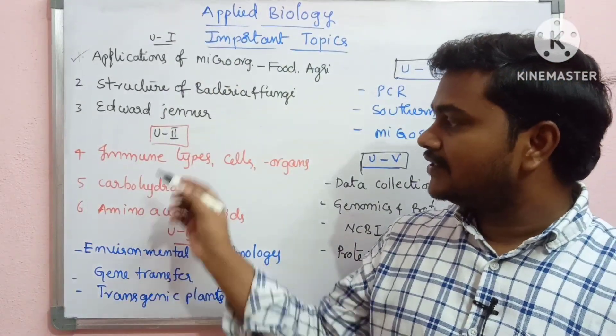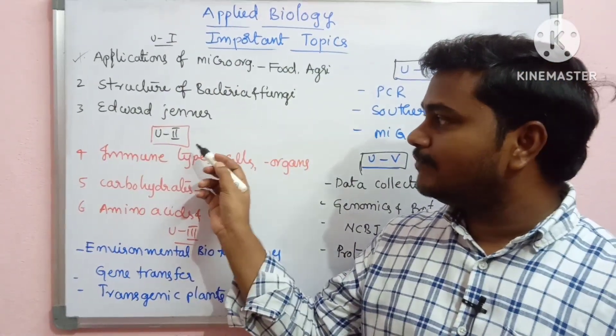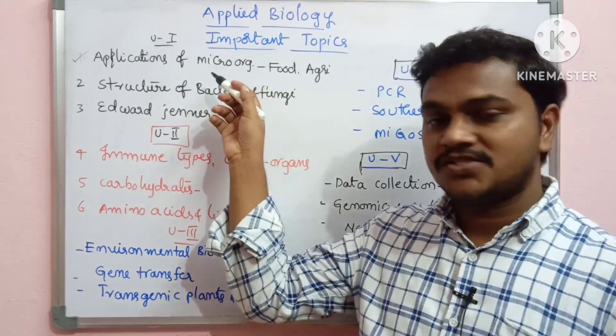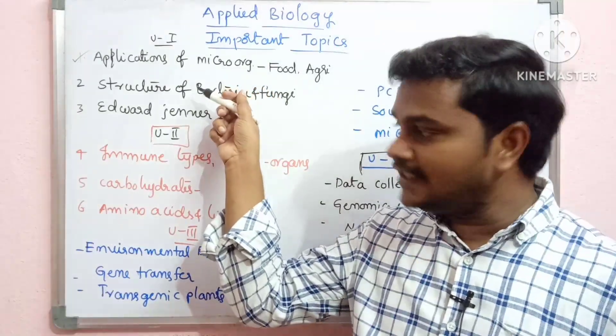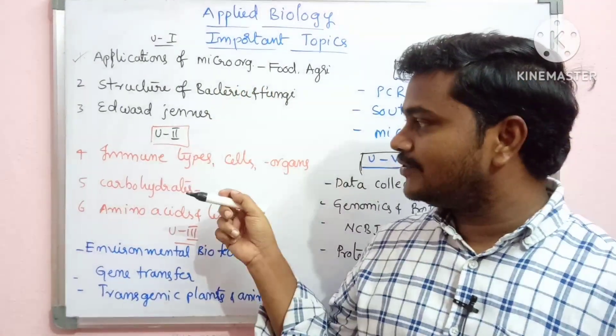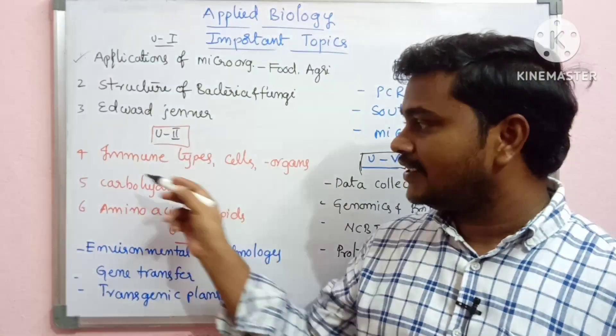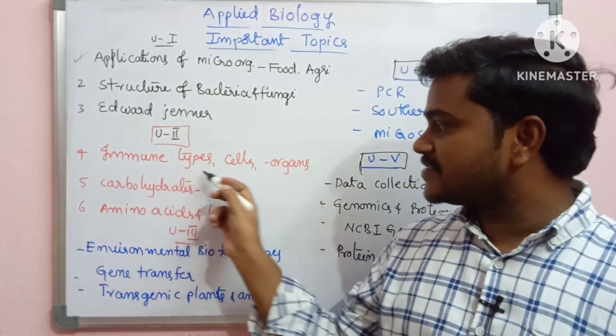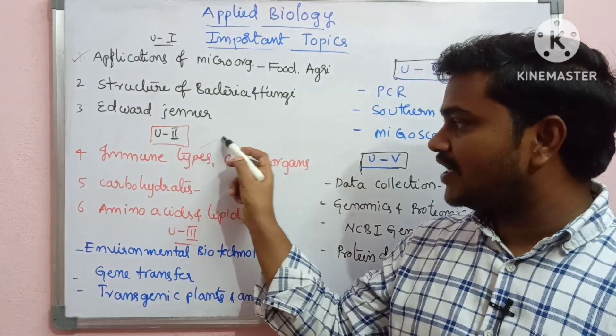In Unit 2, there is Immunology. There are two different types of immunity. These two are very important.